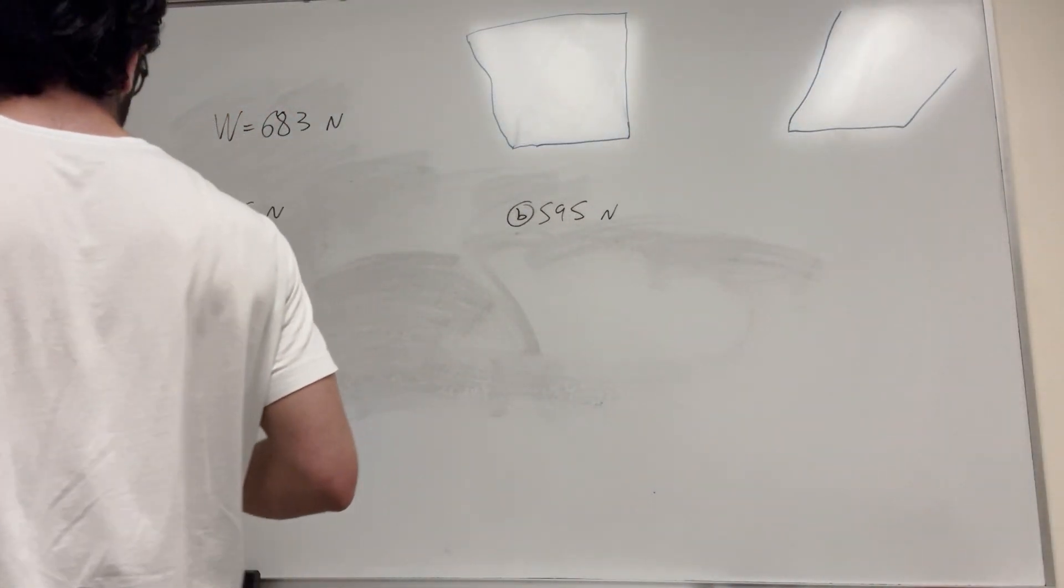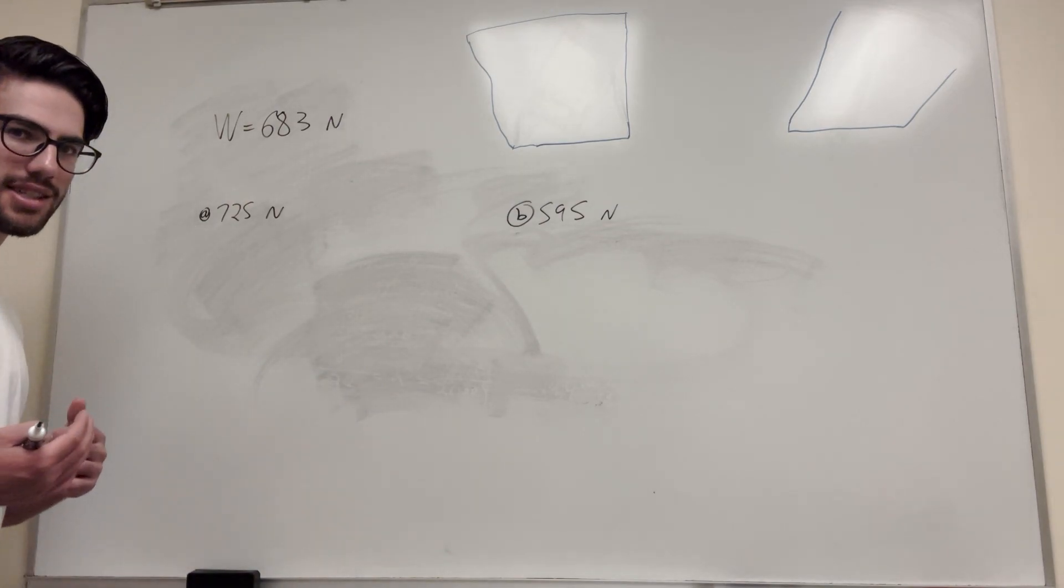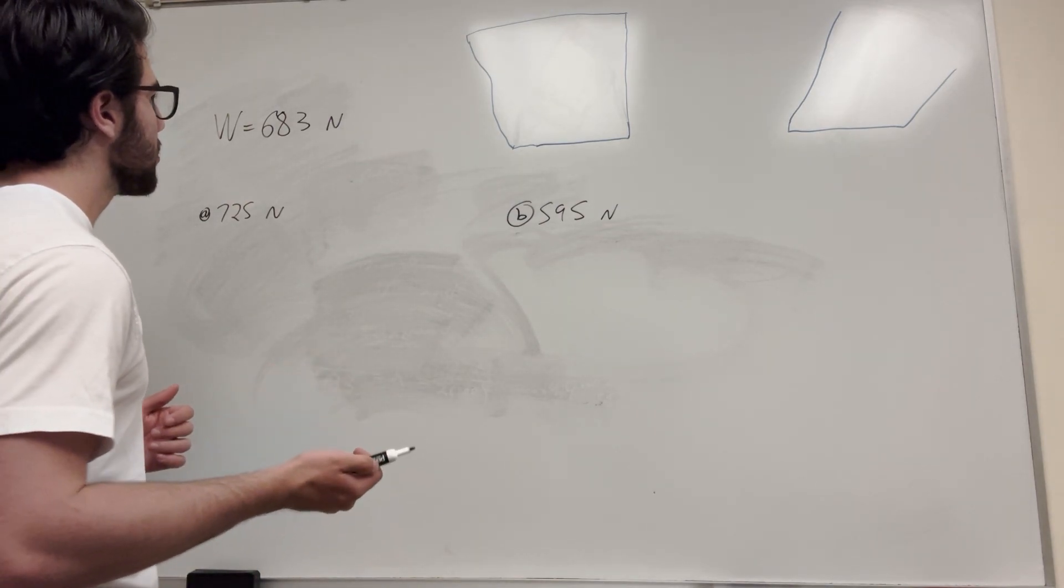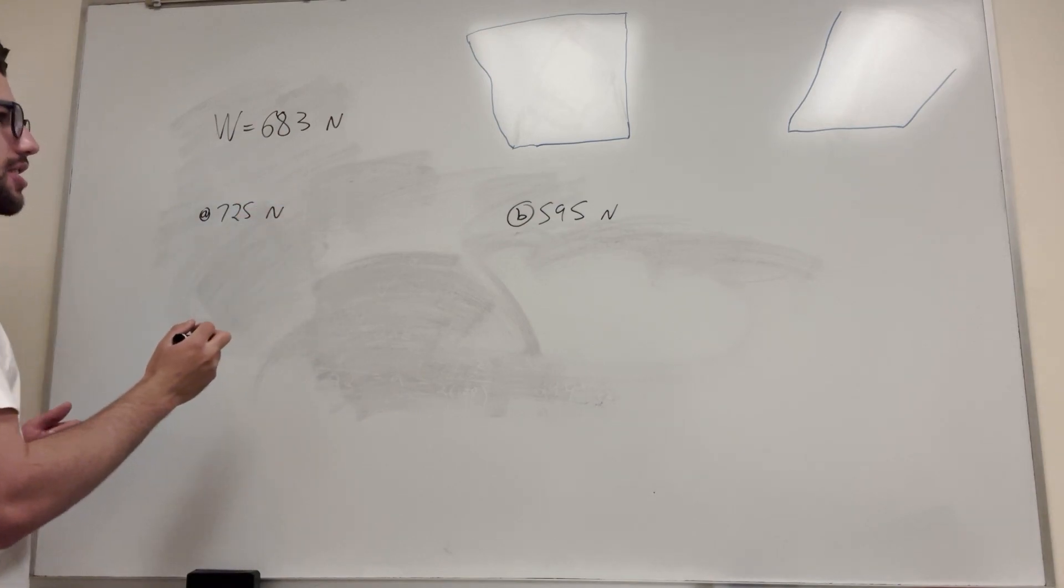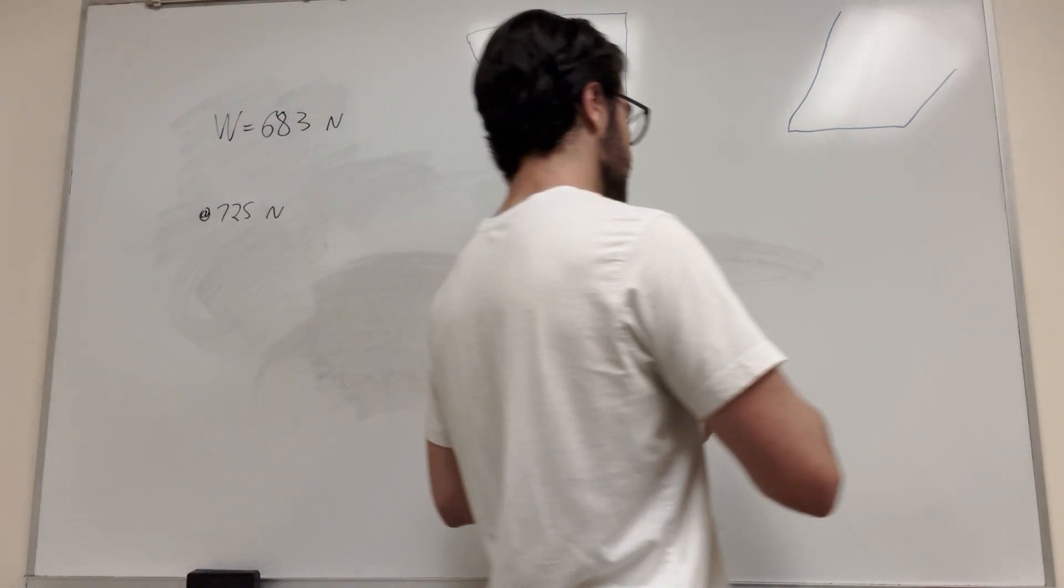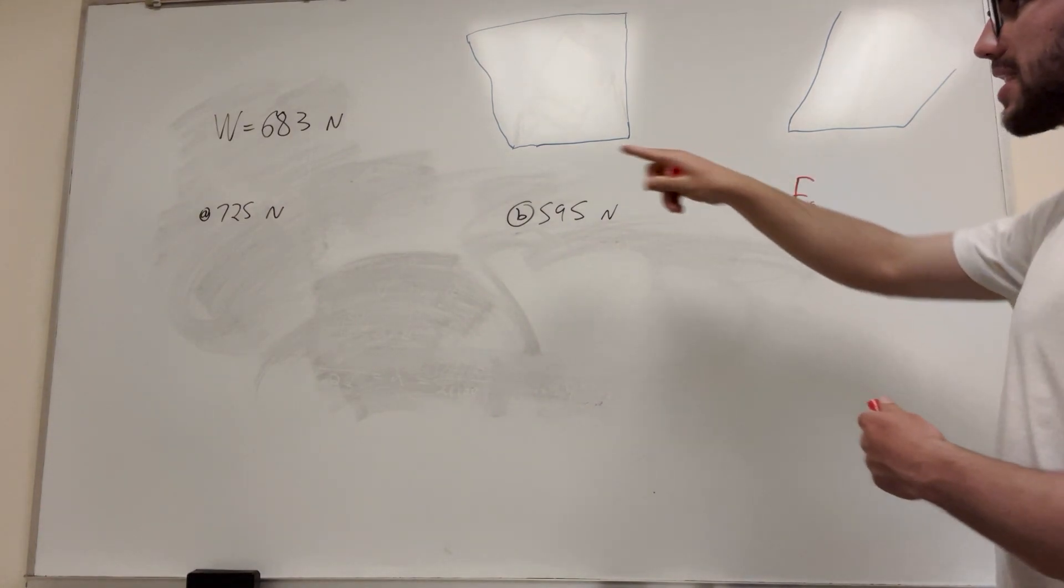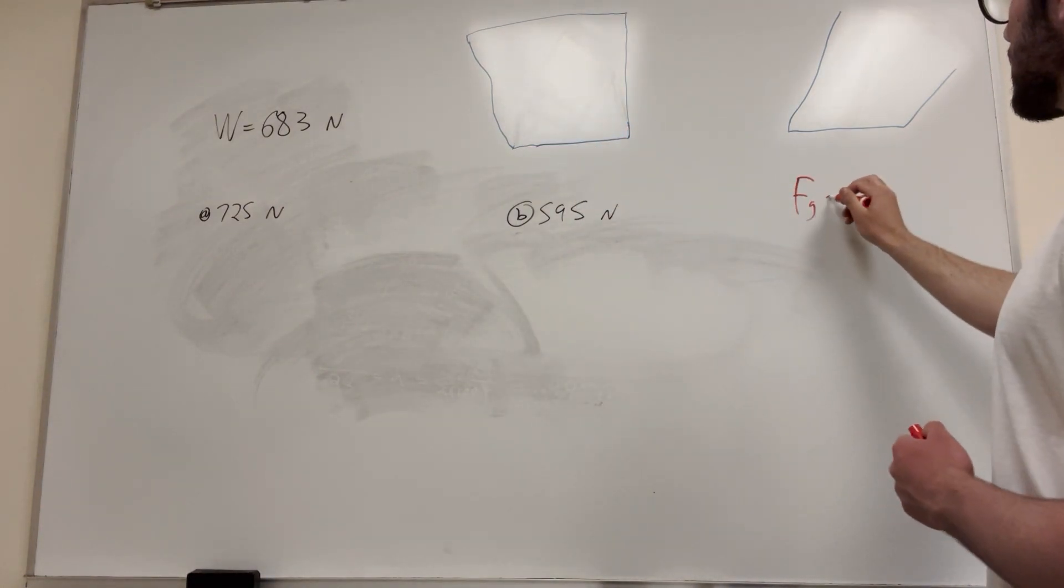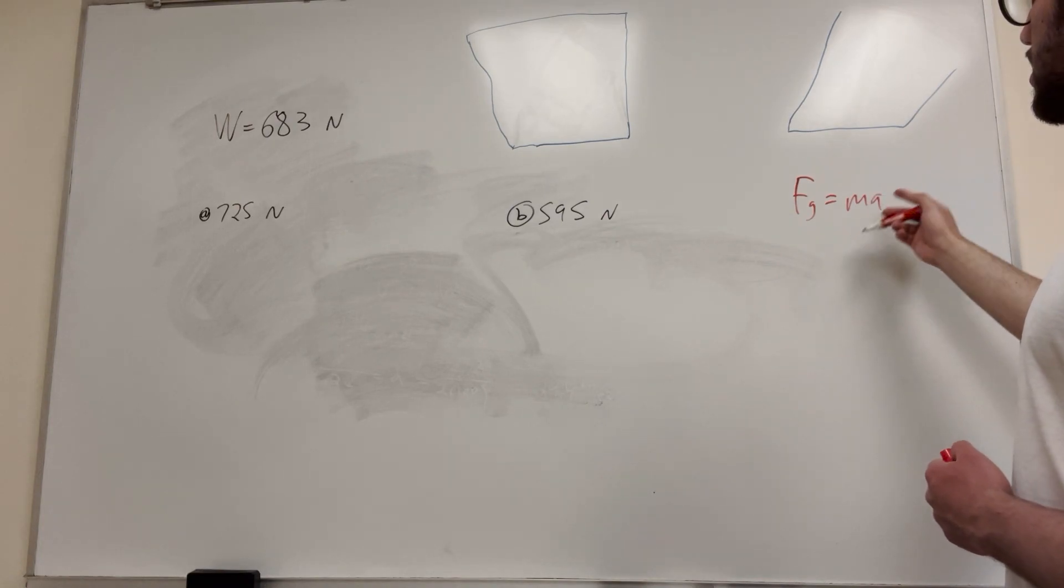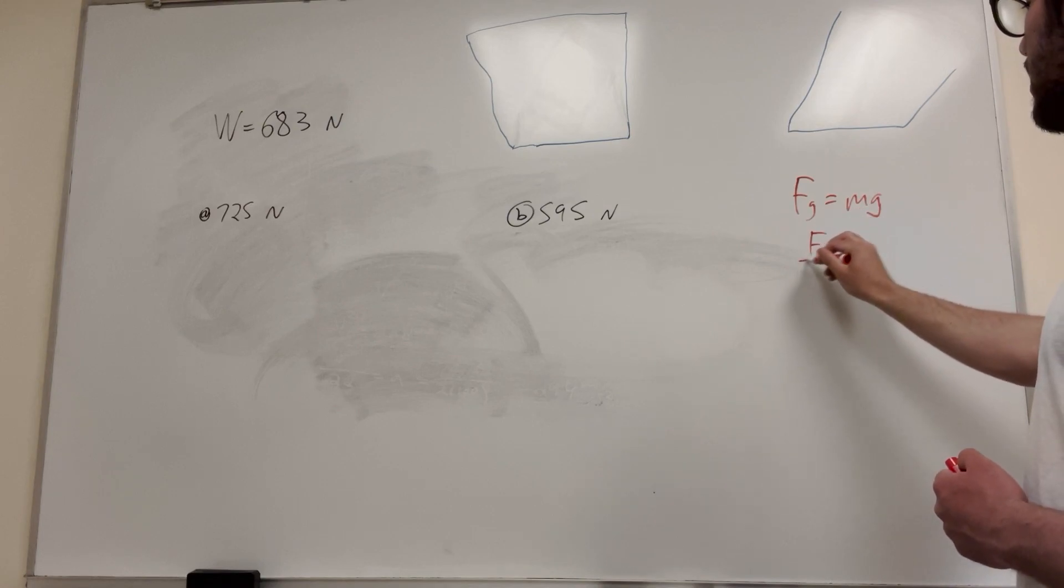So what are we going to need? First of all, we're going to need a mass in kilograms, not just in newtons. So we know that force of gravity, which is basically weight in this case, equals mass times acceleration. We know that acceleration is gravity, so it's just g. So if we're trying to find our mass, we're going to take force of gravity divided by gravity and that's going to be our mass. So we're given 683 newtons divided by 9.81, and that's going to give us our mass.